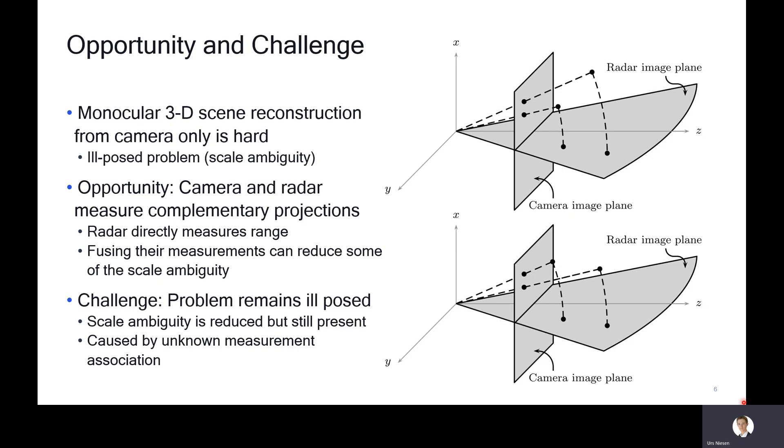The main cause is the unknown measurement association. What I'm showing here on the right is two different 3D scenes that have the same camera and radar image projections. On the top, you have two points or objects, and these are the projections in the two planes. Here on the bottom, a different scene with these two points that have the same image projection, the same camera image projection and the same radar image projection. Given that they have the same projections, you cannot disambiguate the two scenes just from those two measurements. So 3D scene reconstruction from camera and radar is still ill-posed.